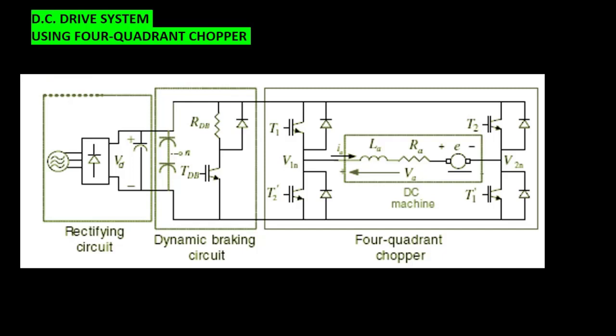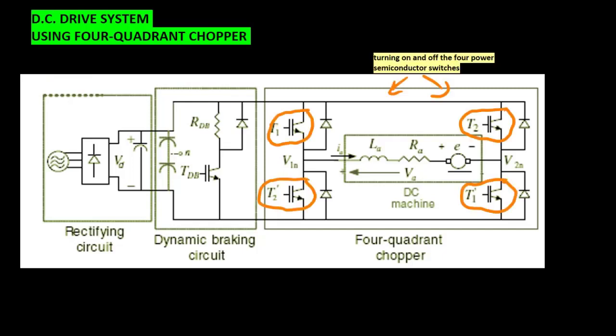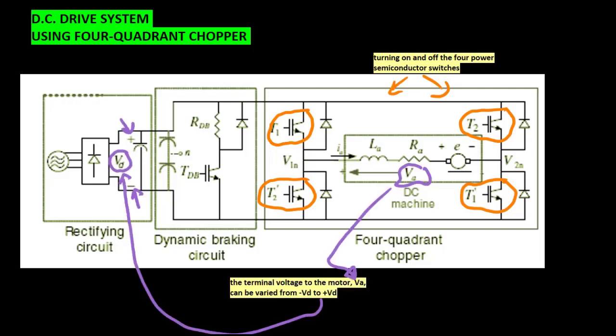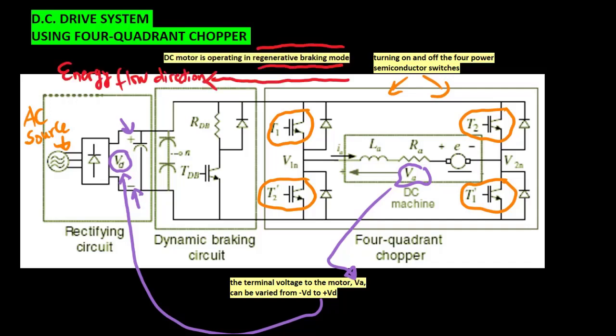In the circuit shown, by turning on and off the four power semiconductor switches, the terminal voltage to the motor VA can be varied from minus VD to plus VD, which is normally almost the peak of the line-to-line voltage of the AC source. When a DC machine operates as a generator — that is, when a DC motor is operating in regenerative braking mode — the link voltage VD will increase due to energy accumulated in the DC link capacitor.